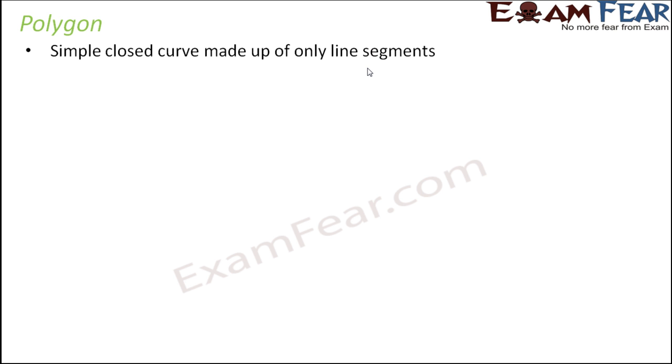We can define polygon as a simple closed curve made up of only line segments. Now here you need to understand the meaning of each term. What do we mean by a simple curve? A simple curve means a curve which does not intersect itself or which does not cross over itself.